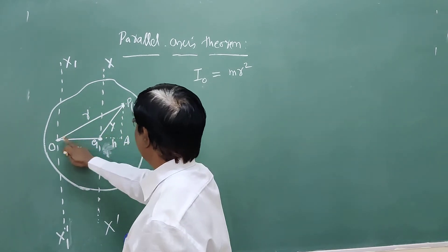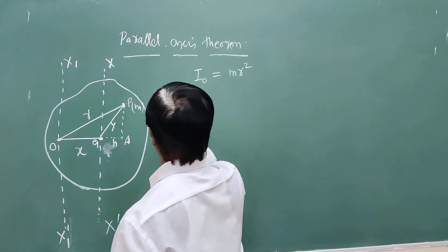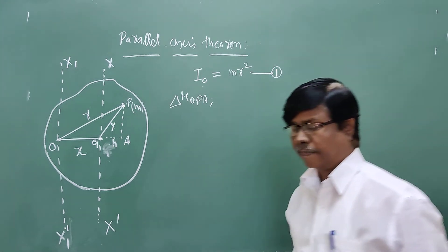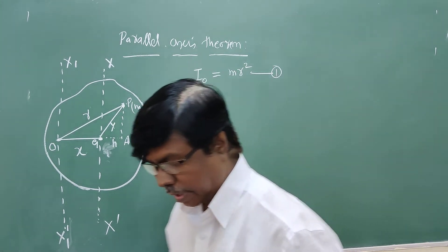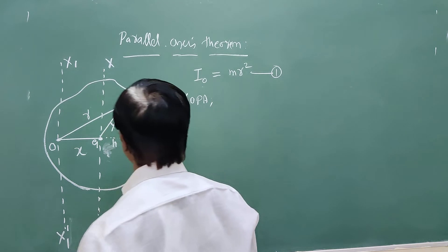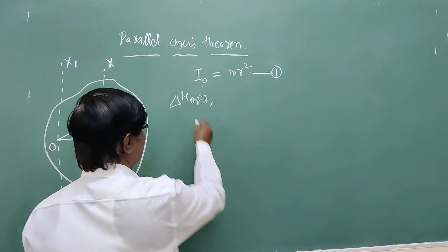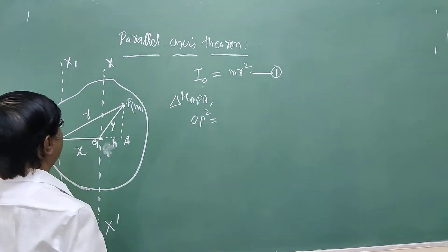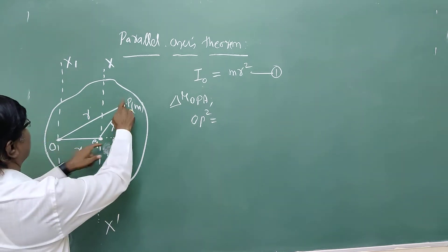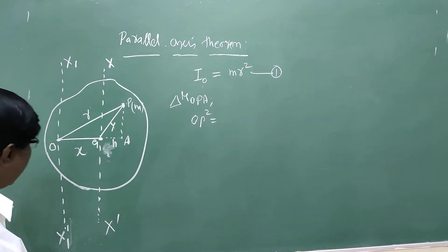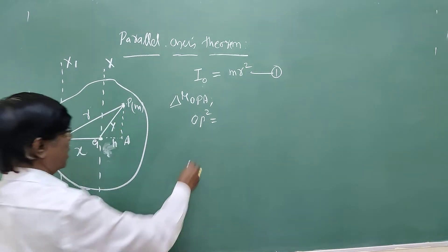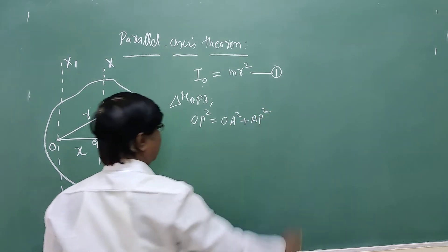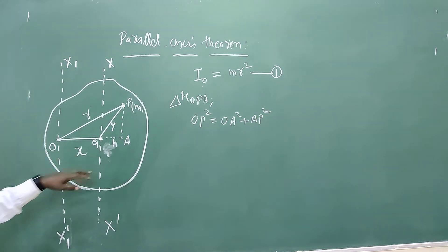From triangle OPA, OP² = OA² + AP². OA = X + H, so expanding: OP² = (X + H)² + AP² = X² + 2XH + H² + AP².